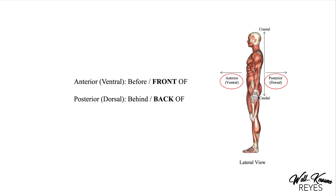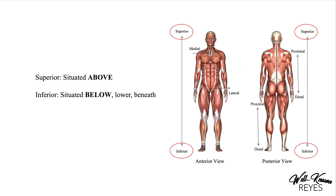Next is superior and inferior. Superior means situated above. Inferior means situated below, lower, or beneath. For instance, the head is superior to the feet. Another example is both knees bilaterally are inferior to the shoulders.